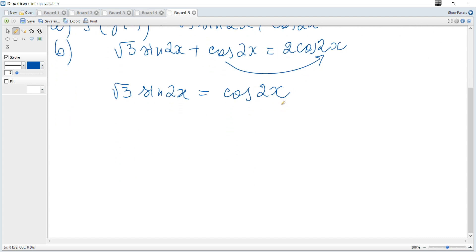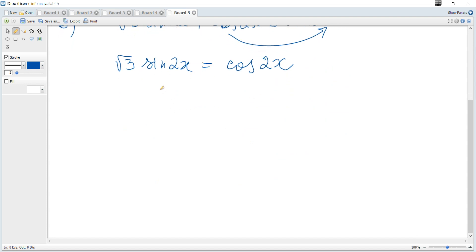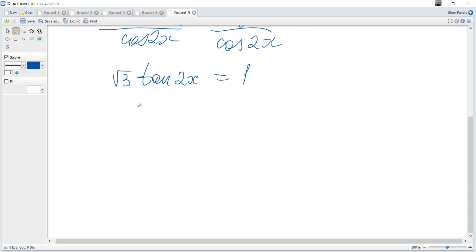We can divide both sides by cosine to get √3tan(2x) = 1. Hence we get only one function and we can solve it. So tangent becomes 1/√3.